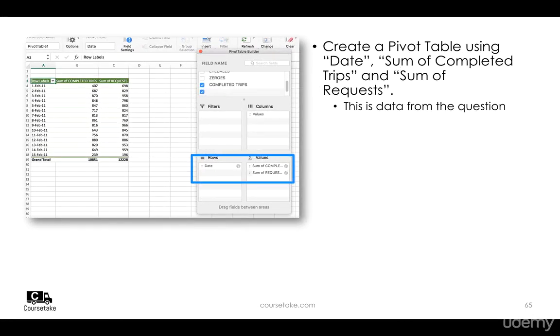Create a pivot table using date, sum of completed trips, and sum of requests. Again, this is data directly from the question, and we've seen this multiple times.